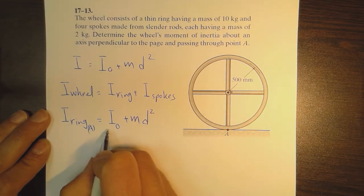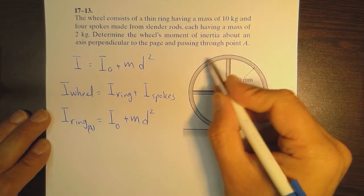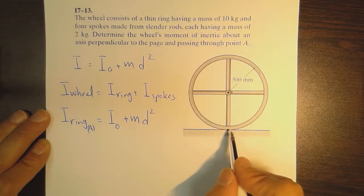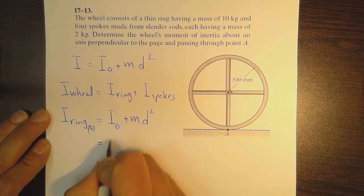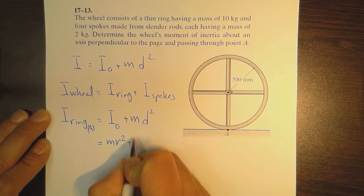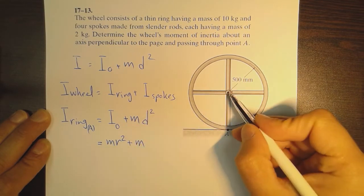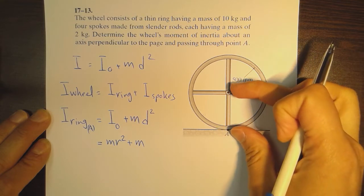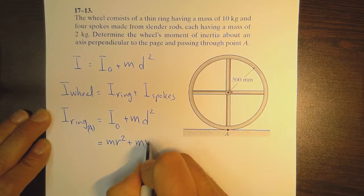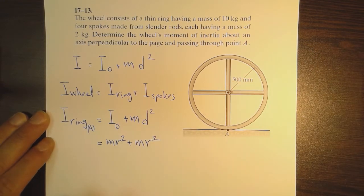From the information available, the moment of inertia of a ring around its centroid is mr². The mass is m and the distance between these points is the radius itself, so we have r².